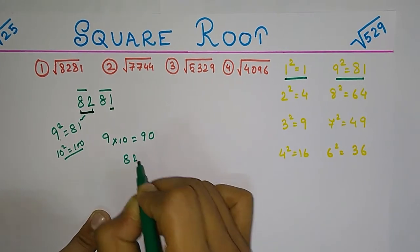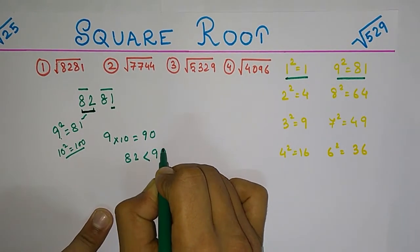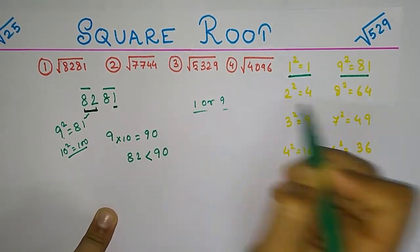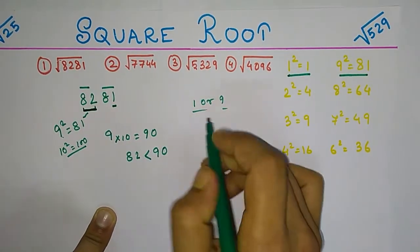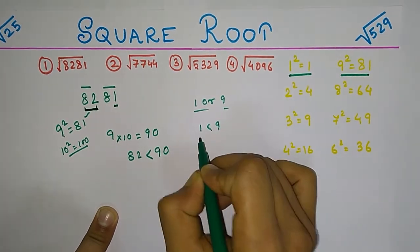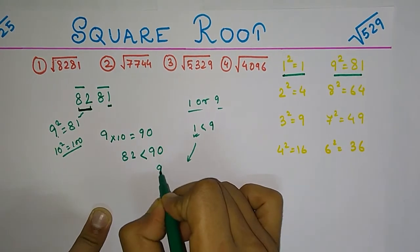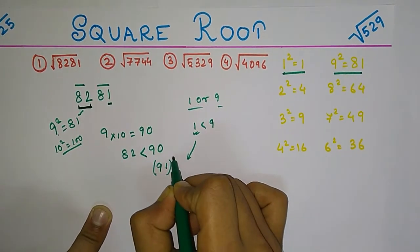we know that 1 is less than 9, so 1 will be the rightmost part and 9 will be the leftmost part. That is, 91 squared equals 8281. We will move on to example number 2.